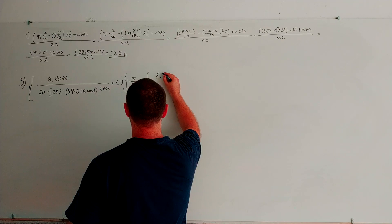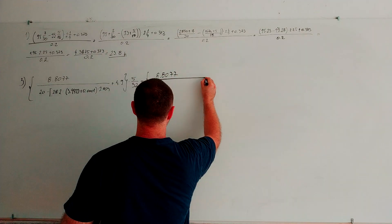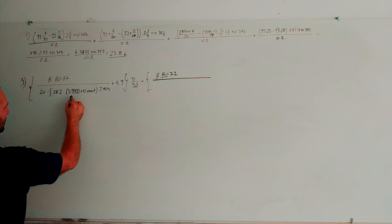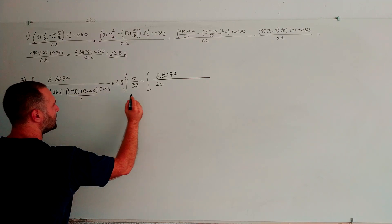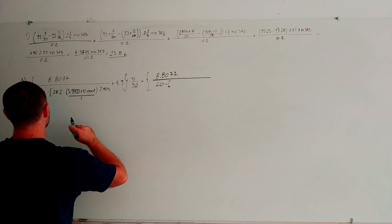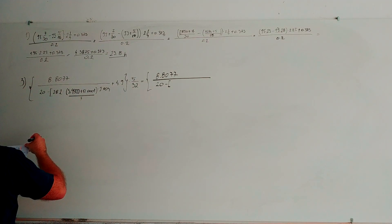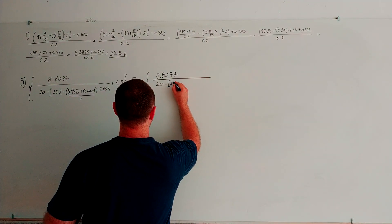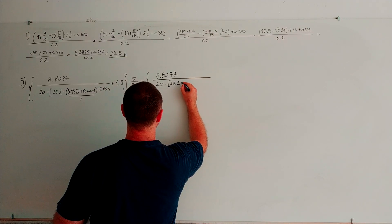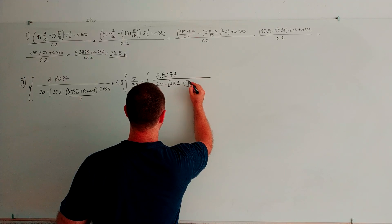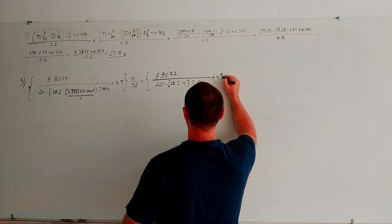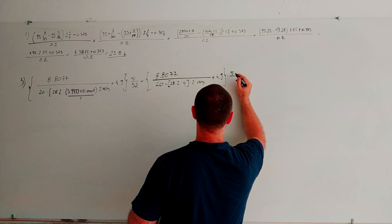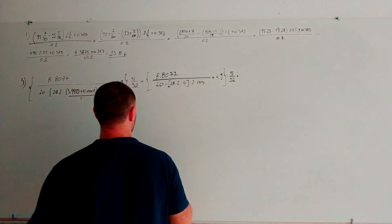8.8077 through 3.999 plus 0.001 is number 4. If we write down 20 minus, here we have 28.2 divided by 4, multiply by 2, 0.004 plus 4.9, big brackets, multiply by 4, multiply by 5 through 32.